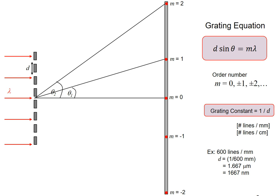Zero order isn't useful for separating wavelengths because every wavelength sends some light straight ahead to m equals zero. So if your light source is a pale blue mixture of several wavelengths, when you look straight ahead at m equals zero that will look pale blue — every wavelength in the original source contributes some energy going straight ahead.